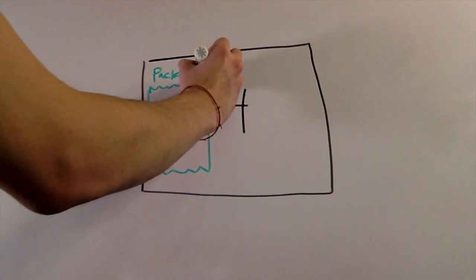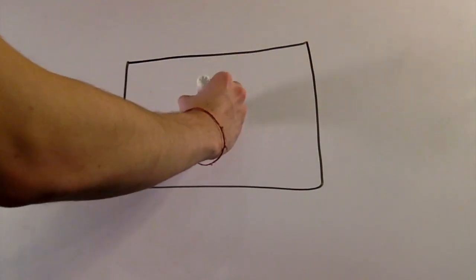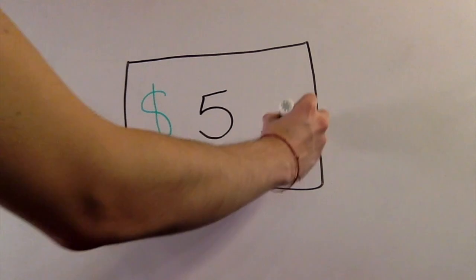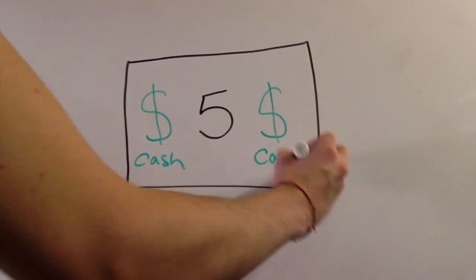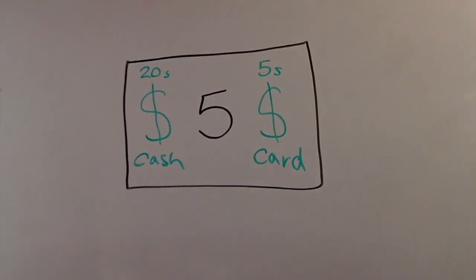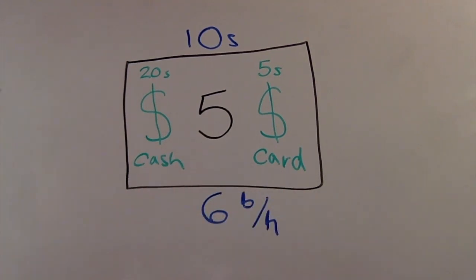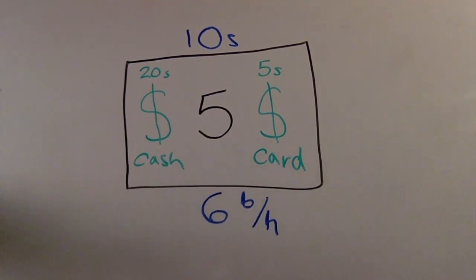Station 4 is where the burrito gets wrapped and packaged in 28 seconds and has a capacity of 2.14 burritos per minute. Finally, the customers pay for their order at Station 5. This usually takes 20 seconds when paying with cash, 5 seconds with card, or 10 seconds on average. Station 5 has a capacity of 6 burritos per minute.